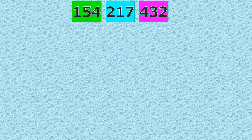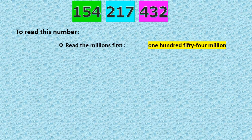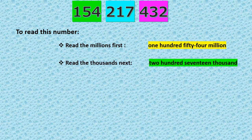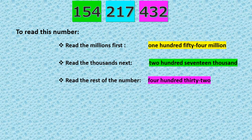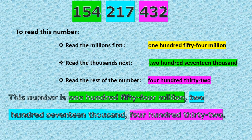Let's take a look at this number. Can you read this number? Here is how to read it. We read numbers from left to right. Read the millions first: 154 million. Read the thousands next: 217,000. Then read the rest of the number: 432. So this number is 154,217,432.